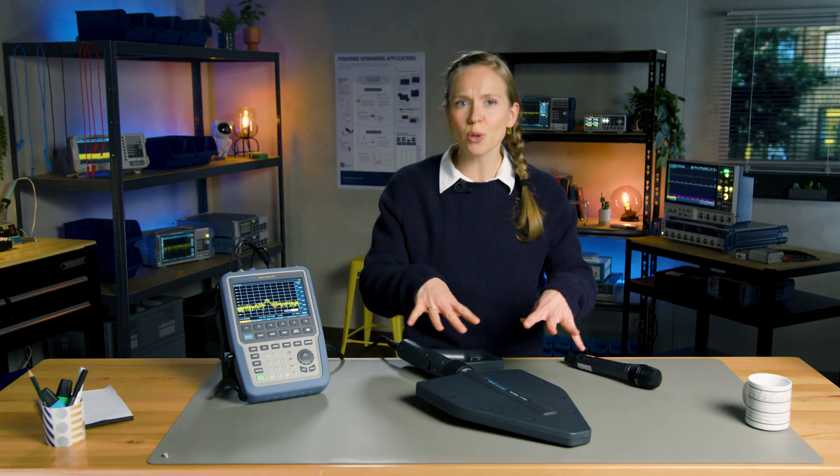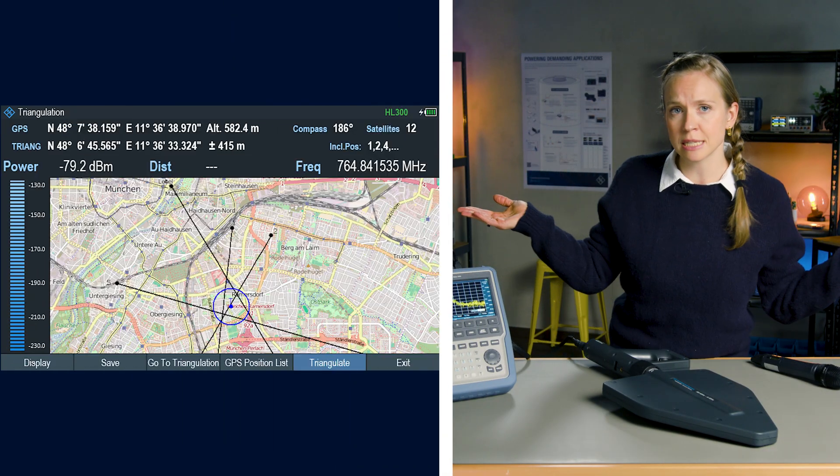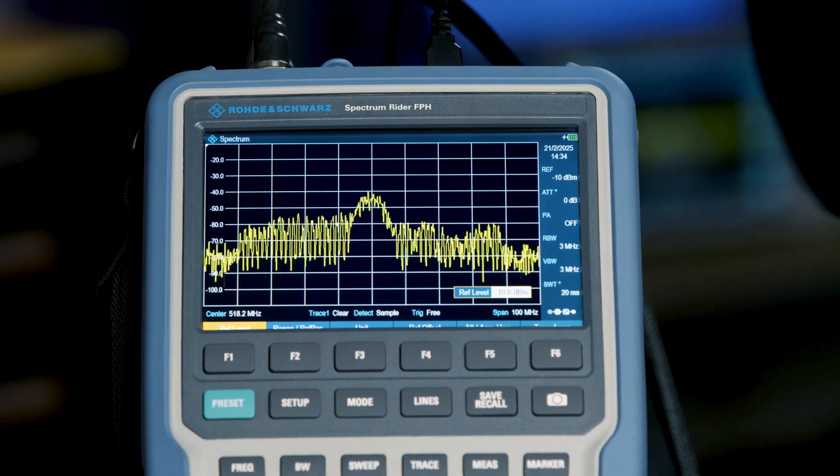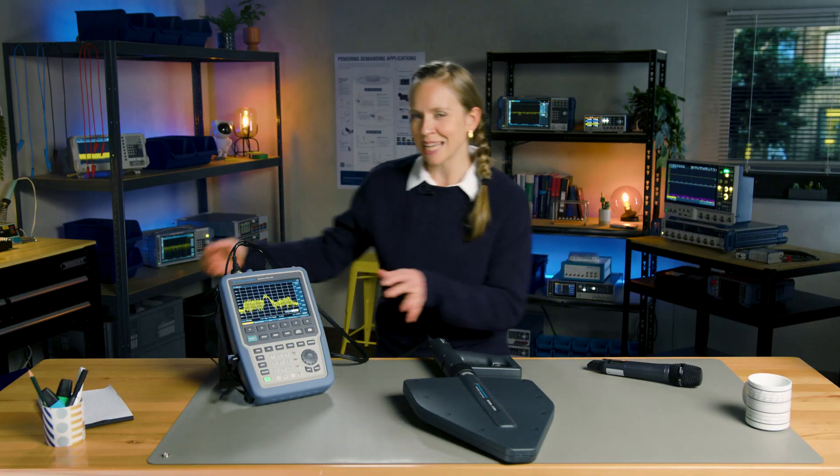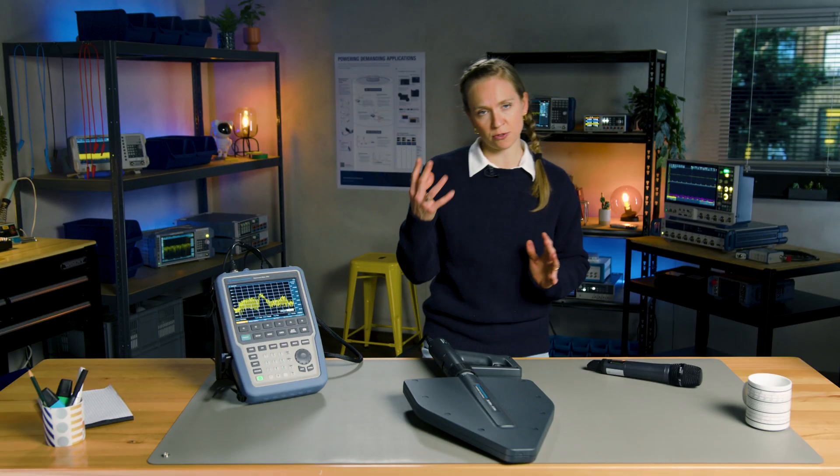Combined with the Rohde & Schwarz antennas, the FPH provides a one-stop solution for both indoor and outdoor interference hunting. Its ability to import outdoor and indoor maps within the FPH device facilitates the measurement. Its lightweight design and long battery life make it perfect for fieldwork.